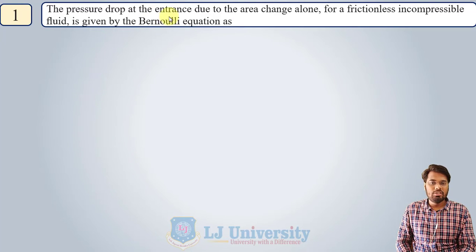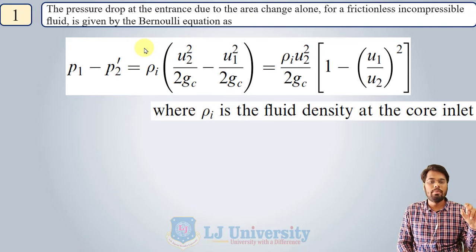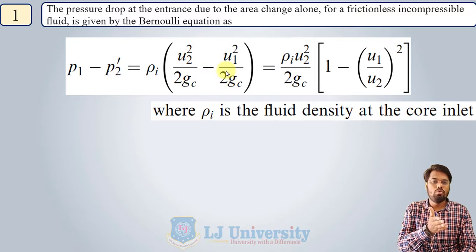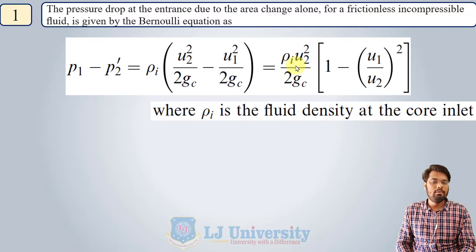The pressure drop at the entrance due to area change alone — for frictionless incompressible flow — is found by applying Bernoulli's equation. For the same horizontal pipe and same cross-sectional area, we get p1 minus p2' (where p2' is an imaginary point at the entrance) equal to ρu2²/2g minus ρu1²/2g. Simplifying, this becomes ρi·u2²/(2gc) · (1 − (u1/u2)²).